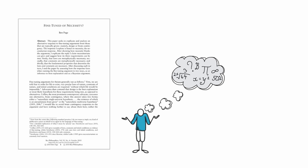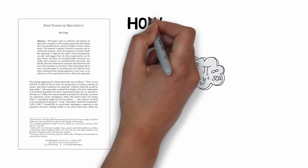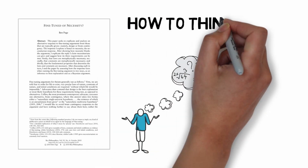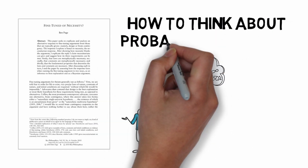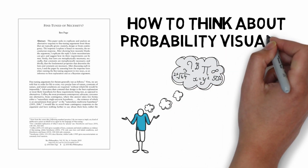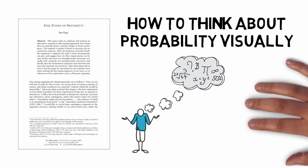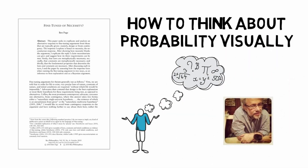Well, in this video I want to talk about how we can do Bayesian probability visually, using a method that I learned from John Hawthorne.